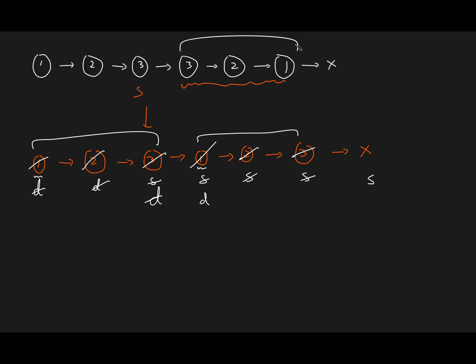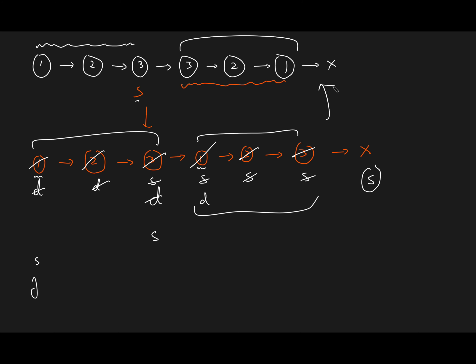Why this works: I reversed the right half, and for it to be a palindrome, the right half has to equal the reverse of the right half — which is exactly what I've done. If everything matches, slow will reach null, meaning the linked list is palindromic. If the interviewer wants you to restore the original linked list, you can again find the middle and reverse the right half back. But if any element doesn't match between the left and right halves, you return not a palindrome.